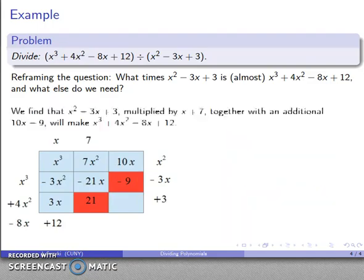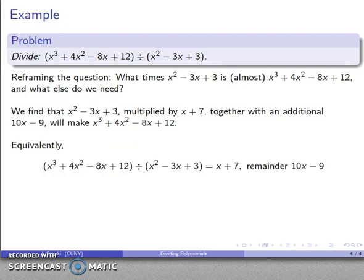That allows me to answer my reframed question. I can also write this in a slightly different form: the quotient gives me x + 7, and the additional bit is my remainder. So the quotient is x + 7 with remainder 10x - 9, and there's my polynomial quotient.